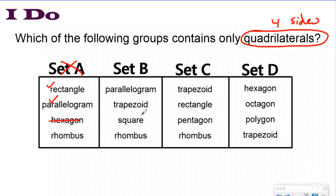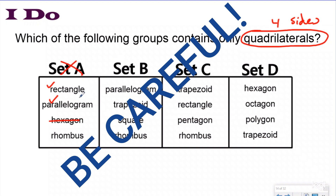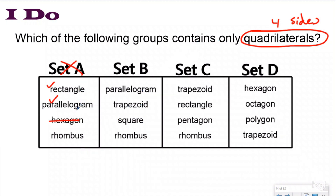Notice what they did — they put two quadrilaterals right off the bat. Why? Because the people who make these questions know that some students will not look at all of the choices. You have to be vigilant, as Professor Moody would say — constant vigilance. You have to look at each shape in the group. You can't just look at the first one or the last one. You've got to look at all of them.